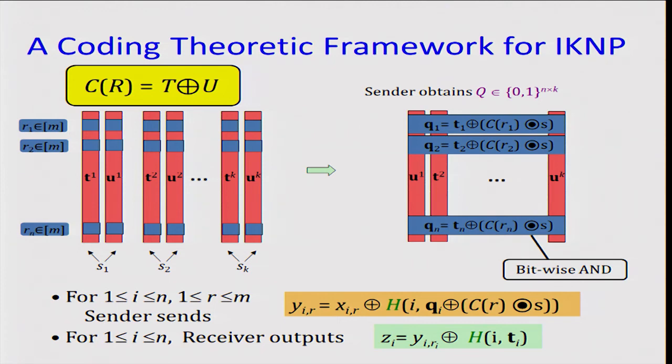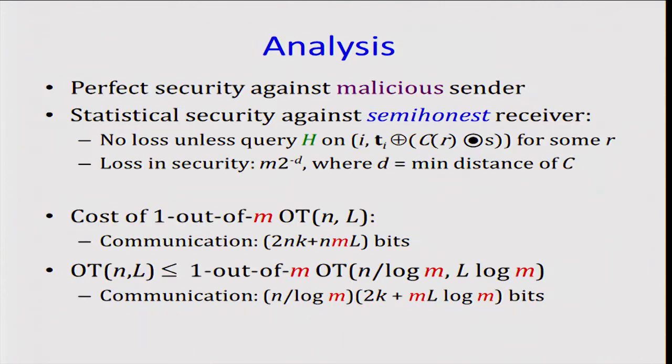Now you will have M masks which are generated in the same case as before. The masks are generated as QI XOR C of RI bitwise AND with S. And once again, we can show that the receiver will know only TI, and therefore he'll be able to mask the right value and get the correct sender input.